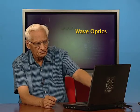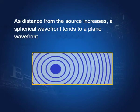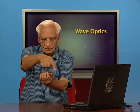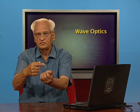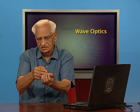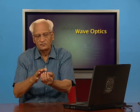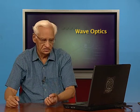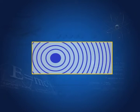Generally, wavefronts are spherical. A source is here, and the disturbance travels in all directions, so wavefronts are in general spherical. But if the distance of the wavefront increases from the source, then these wavefronts tend to become plane wavefronts. As they go away from the source, you can see they look more like plane wavefronts rather than spherical wavefronts.